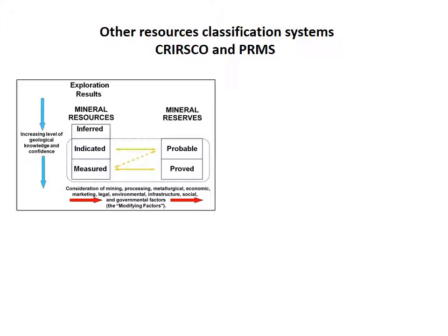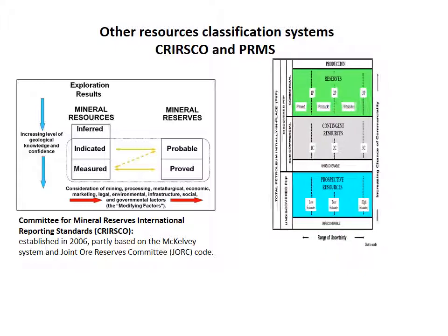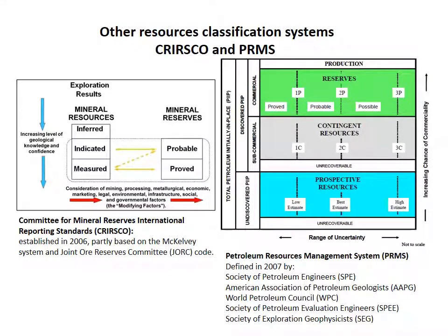Other classification systems are in use. For example, the CRIRSCO template is commonly used in the extractive mineral industries. This system also uses different axes to assess the level of geological knowledge and socio-economic factors. For petroleum resources assessment, the Petroleum Resources Management System, or PRMS, was defined by various professional organizations in the petroleum industry. The system classifies petroleum resources based on the level of uncertainty in geological knowledge and the chance of commerciality.